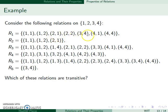I have 3,4 and 4,1 which should combine to give me 3,1 which is not in there. So this one is not transitive.